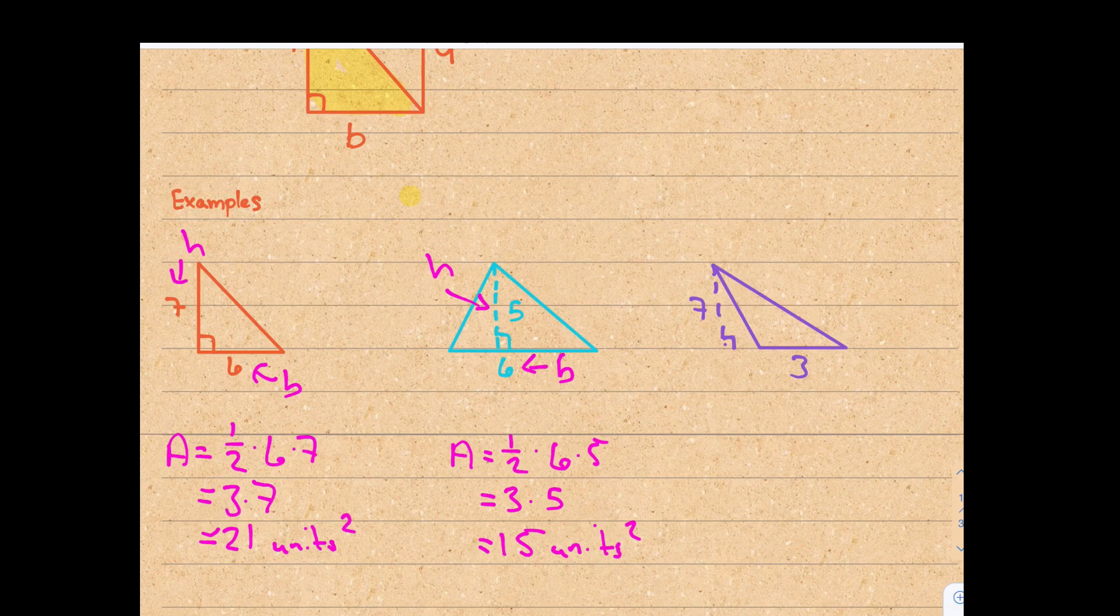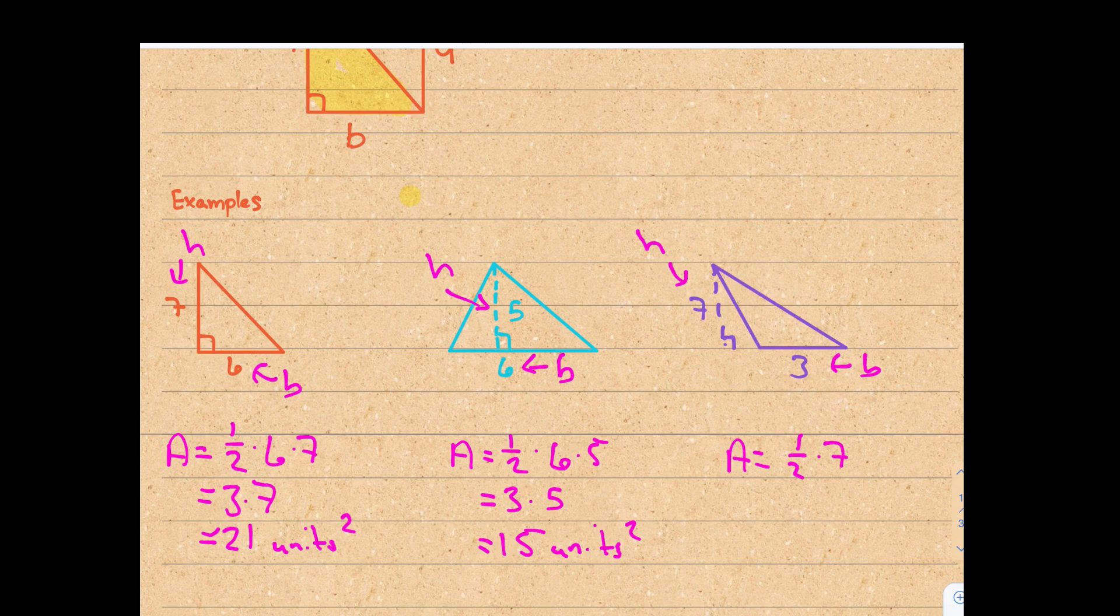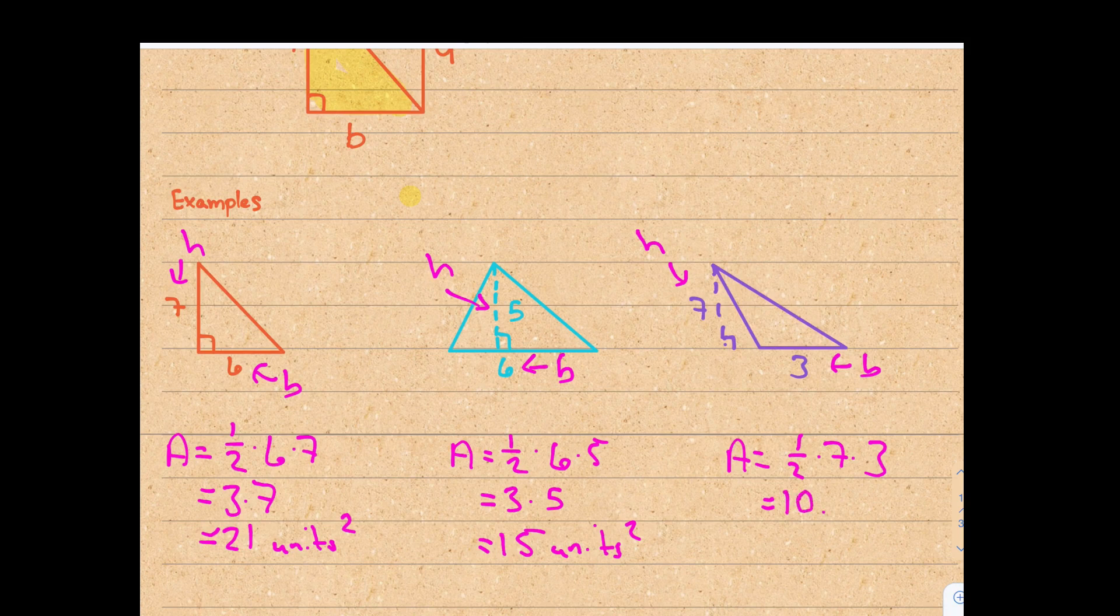And finally, the height of a triangle is sometimes outside of the triangle. It just depends on how it looks when you're trying to, if it's leaning over. So the height is seven. The base is three. So our area is one-half of seven times three. Which you can use a calculator. I did this in one step. You get 10 and a half, 10.5 square units.